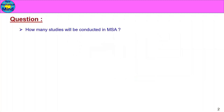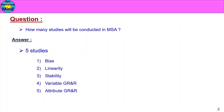How many studies will be conducted in MSA? The answer is 5 studies. What are the studies? Bias, Linearity, Stability, Variable GR&R, and Attribute GR&R.